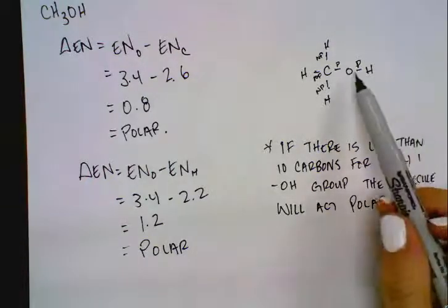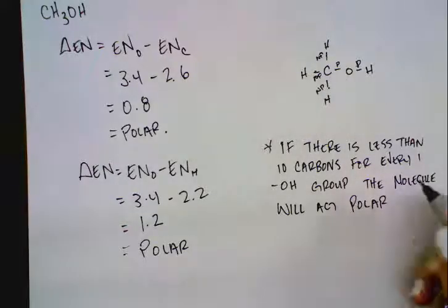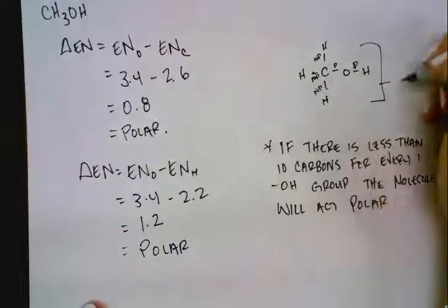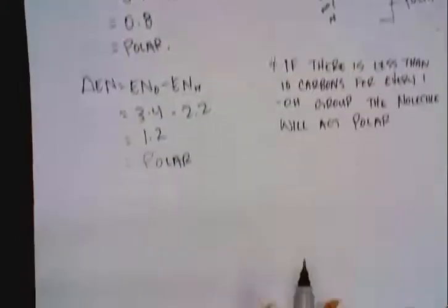the molecule will act polar. Because we have 1 hydroxide and only 1 carbon, we're going to assume that this is going to act polar. If there was something like 10 or 12 carbons, we would assume it acts more nonpolar if there was only 1 OH group.